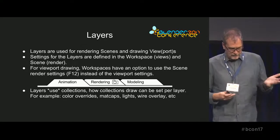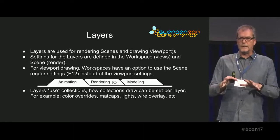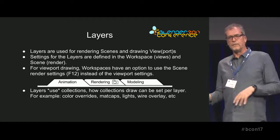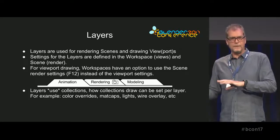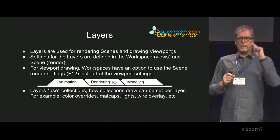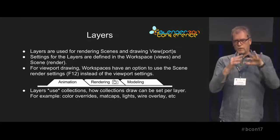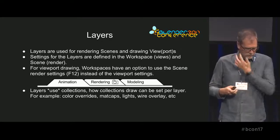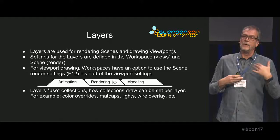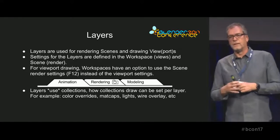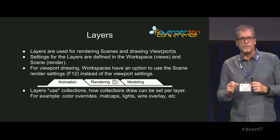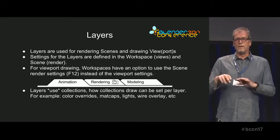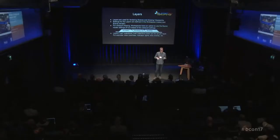The layers are using the collections; the collections are not part of the layers — collections are part of the scene. The outliner will have a collection editor, and then a little layer editor that says layer one: collections one and two; layer two: collections three and four. You can set which collections are on, off, or visible. The layers also support overrides: if you have a collection with trees, you can say I want the trees in this layer to only draw in white wires, and if the render engine supports it, it will render the trees in white or blue.